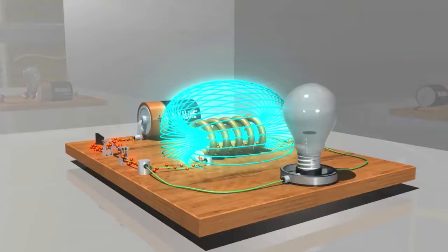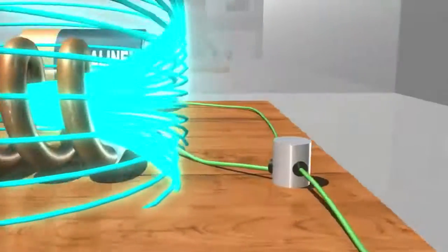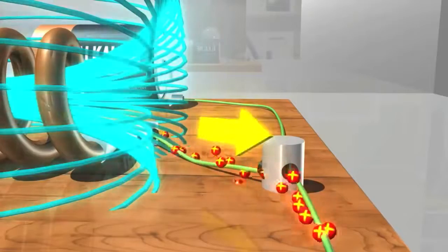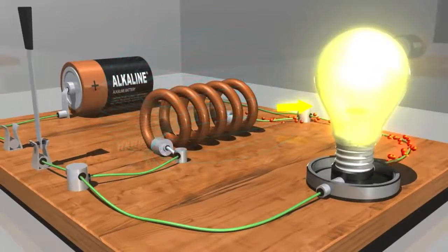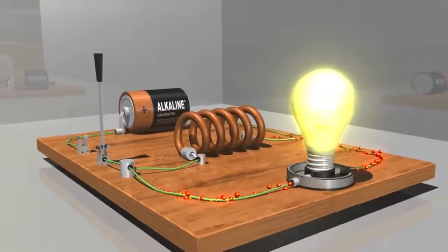The same phenomenon occurs when the magnetic field is shrinking, which happens when we open the switch and stop current flow from the battery. Once again, the back EMF opposes the change that created it. In this case, the change is the cessation of current.